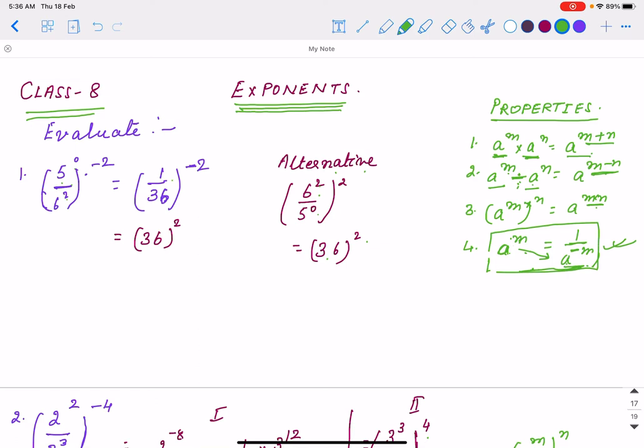I have taken some questions which will clarify more, and one more method, an alternative method is also there. Whichever method is easy for you, you can solve with that. So first question is 5 to the power 0 by 6 square, power is minus 2.